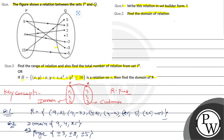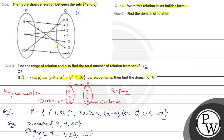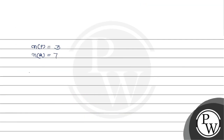Total number of relations from set P to Q — the total number of relations here: simply, the number of elements in set P and the number of elements in set Q. Counting: 1, 2 in P and 1, 2, 3, 4, 5, 6, 7 in Q. So the total number of relations from P to Q will be 2 raised to the power 20.